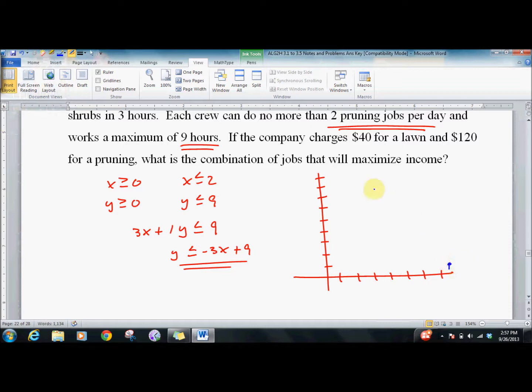Y greater than 0, less than 9. X greater than 0, less than 2. So we've already shaved it down. Negative 3x plus 9. That point looks like it's going to be (2,3). This point (2,0). This point (0,9). This is the area we're looking at.